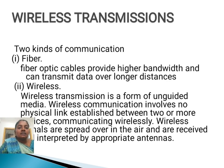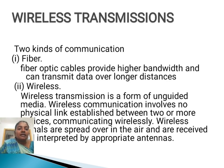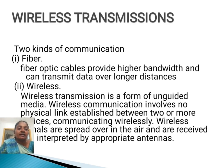Wireless Transmissions. There are two kinds of communication. The first one is fiber. Fiber optic cables provide higher bandwidth and can transmit data over long distances. The next one is wireless. Wireless transmission is a form of unguided media. Wireless communication involves no physical link established between two or more devices communicating wirelessly. Wireless signals are spread over in the air and are received and interpreted by appropriate antennas.